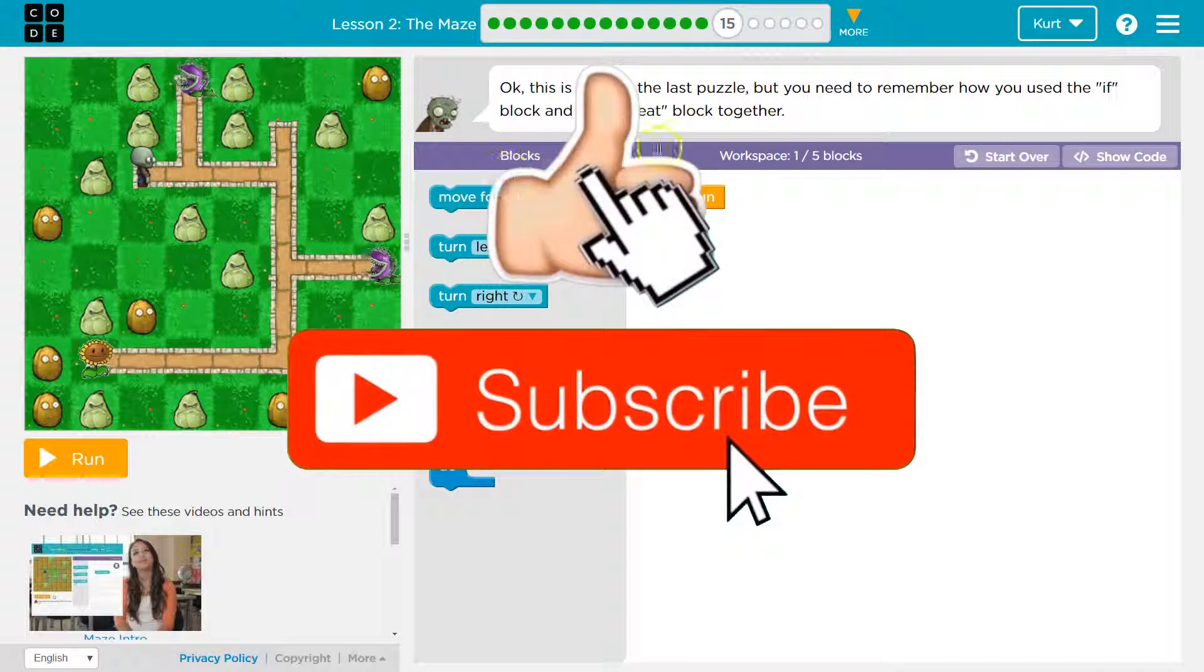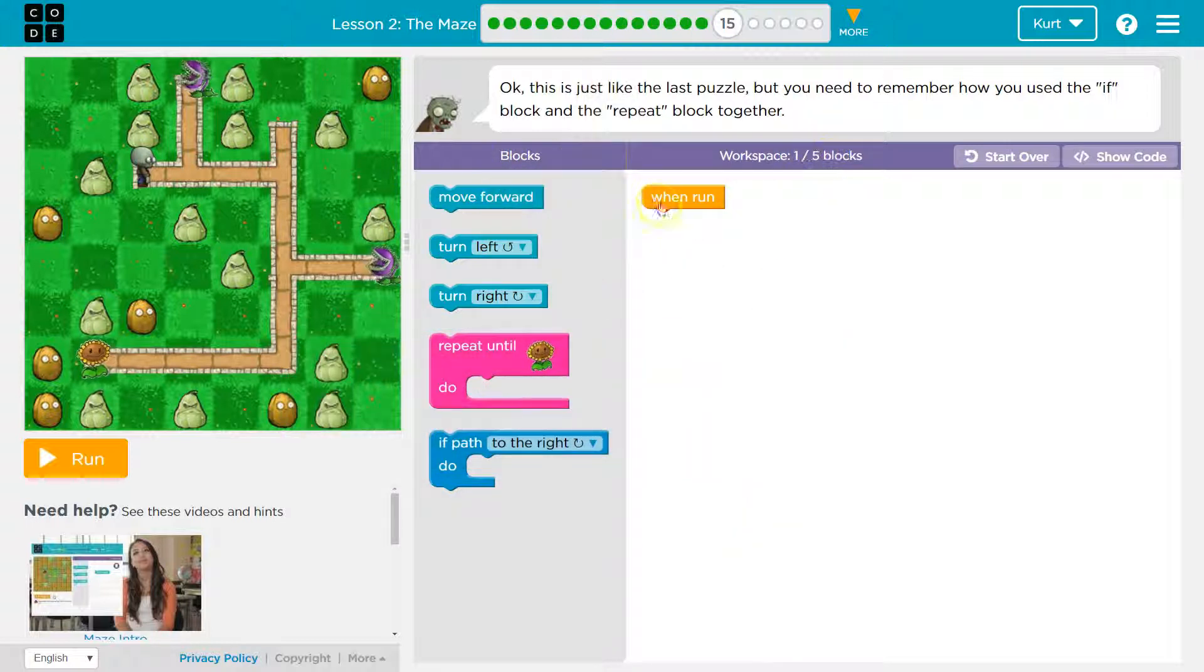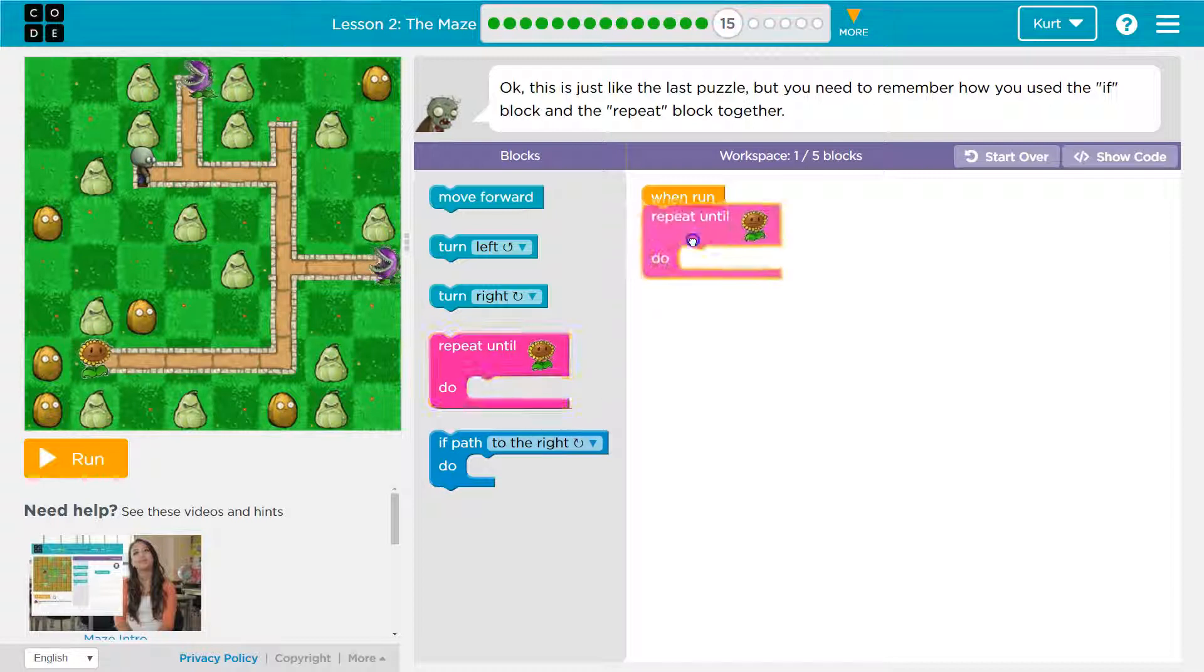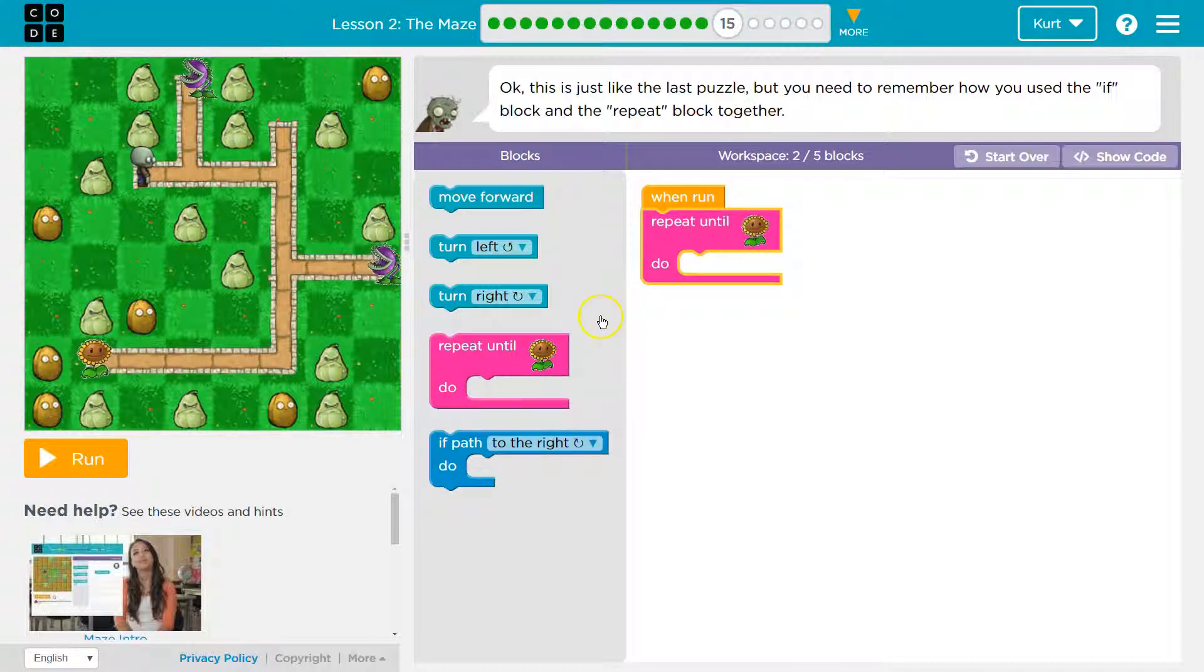Well, okay, how can we use... so they want us to use only four more blocks because we already have win run. And so what are we going to want to do? We need to get to here. So I bet we're going to use a repeat block, and it says we need an if block too.